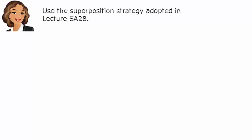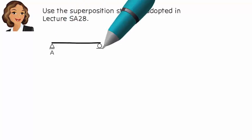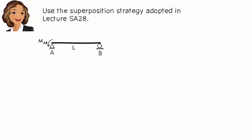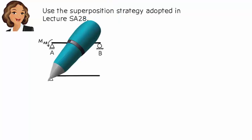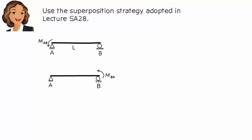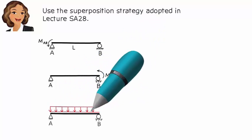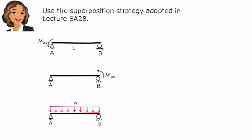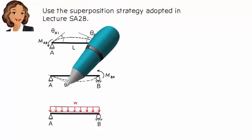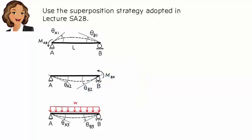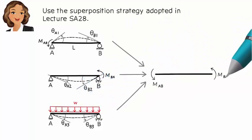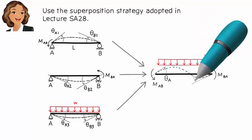Here are the three loading cases we need to consider: a simply supported beam subjected to a positive moment at A, the same beam subjected to a positive moment at B, and the beam subjected to a uniformly distributed load. For each case, we first compute member end rotations, then combine the individual rotations at each end to come up with the total end rotations.